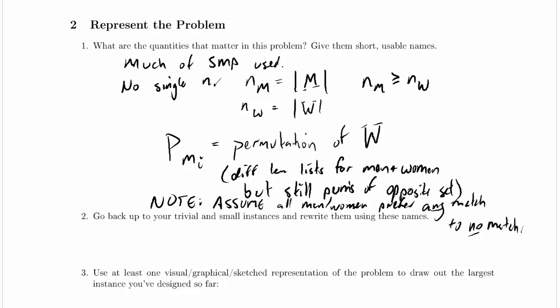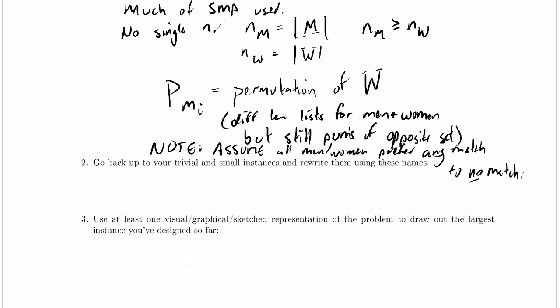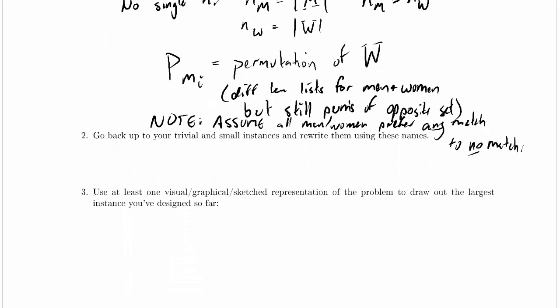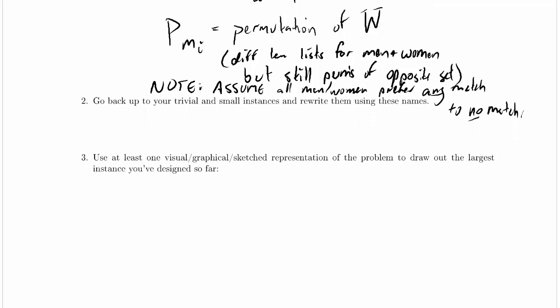There's really nothing to add in the next two parts over what we've already said when we were working through the stable marriage problem. The annotations we could make on our trivial and small instances to clarify them, using the notation we've created so far, wouldn't make them that much clearer than they already are. So I'm just going to leave that aside.